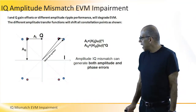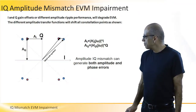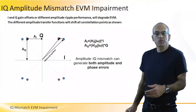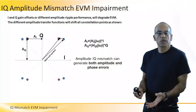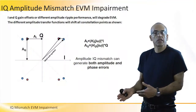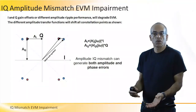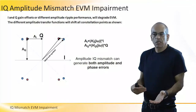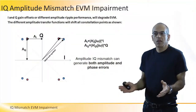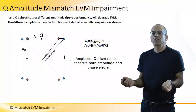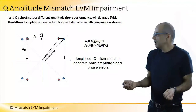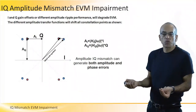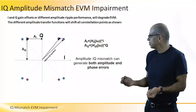Now we will cover IQ mismatch impairment and the effect on EVM. When we talk about I and Q mismatch, we have two errors to consider. One is the amplitude error and the other is the phase error. With amplitude error, the I and Q channels are amplified with a slightly different gain, and so if we have a slightly different gain on I and Q, the original sub-symbol will be shifted in a way that reflects this difference in gain.